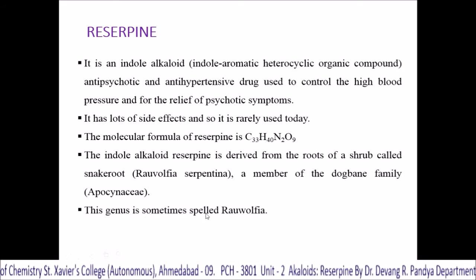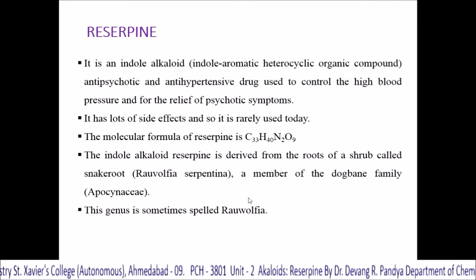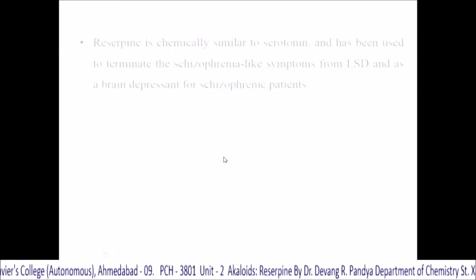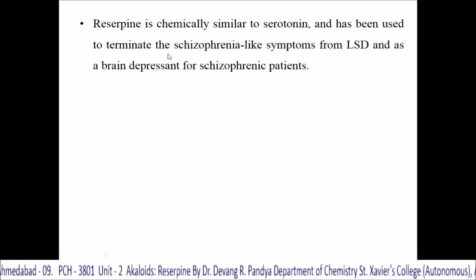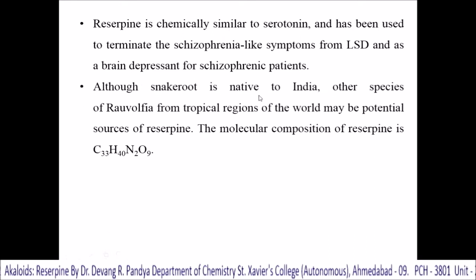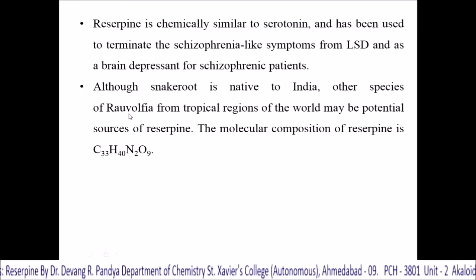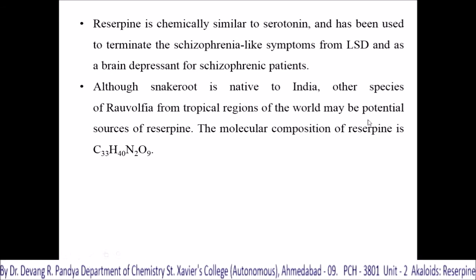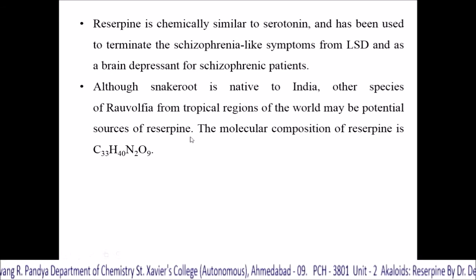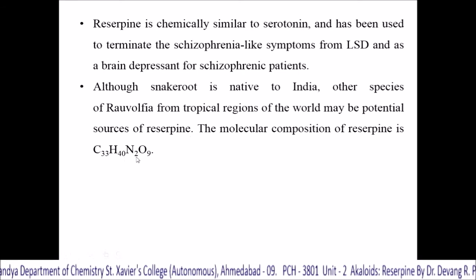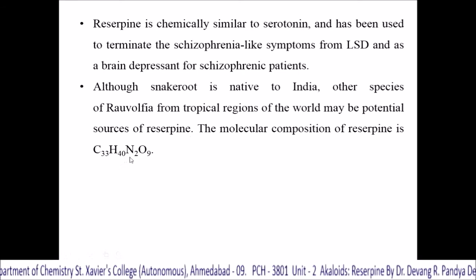It is an indole alkaloid — an indole aromatic heterocyclic organic compound — used as an anti-psychotic and antihypertensive drug to control high blood pressure and relieve psychotic symptoms. It has lots of side effects and so it is rarely used today. The molecular formula is C33H40N2O9. The indole alkaloid reserpine is derived from the root of a shrub called snakeroot or Rauwolfia serpentina, a member of the Dogbane family Apocynaceae. This genus is sometimes spelled Rauwolfia.